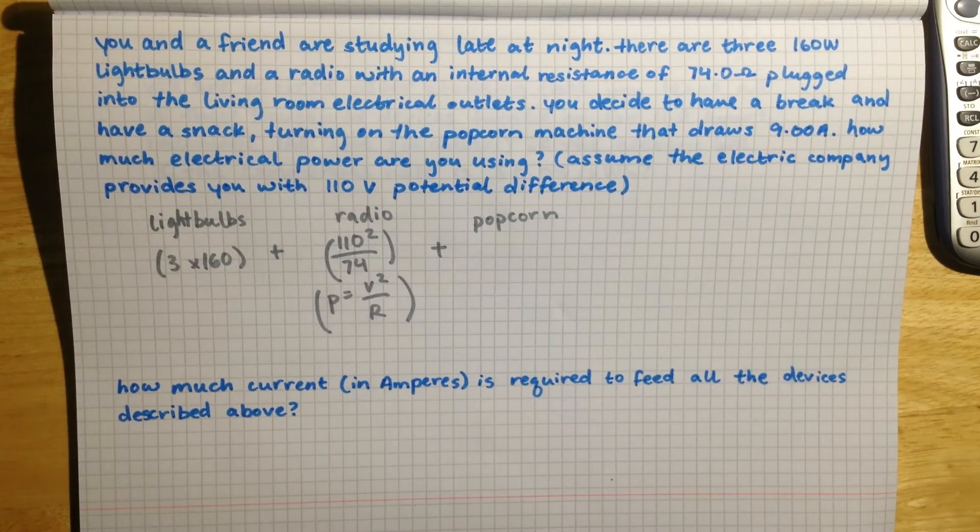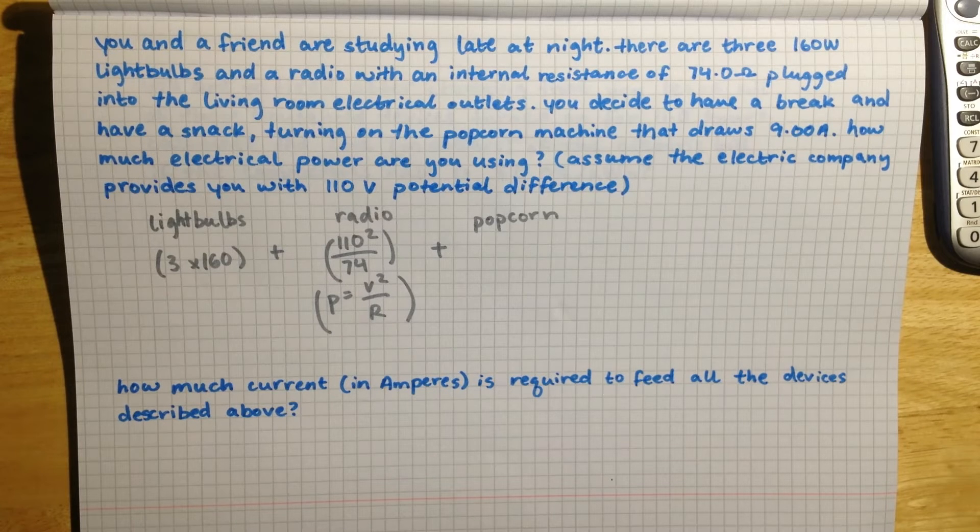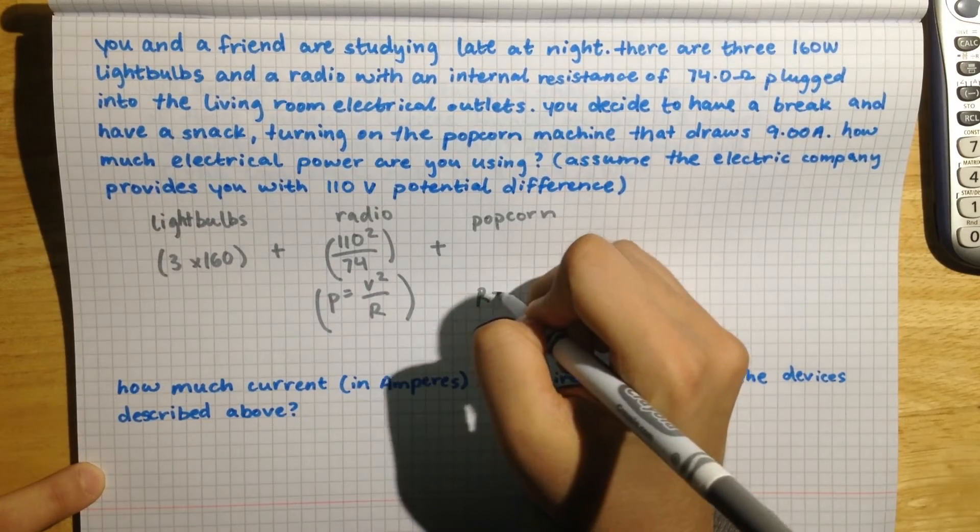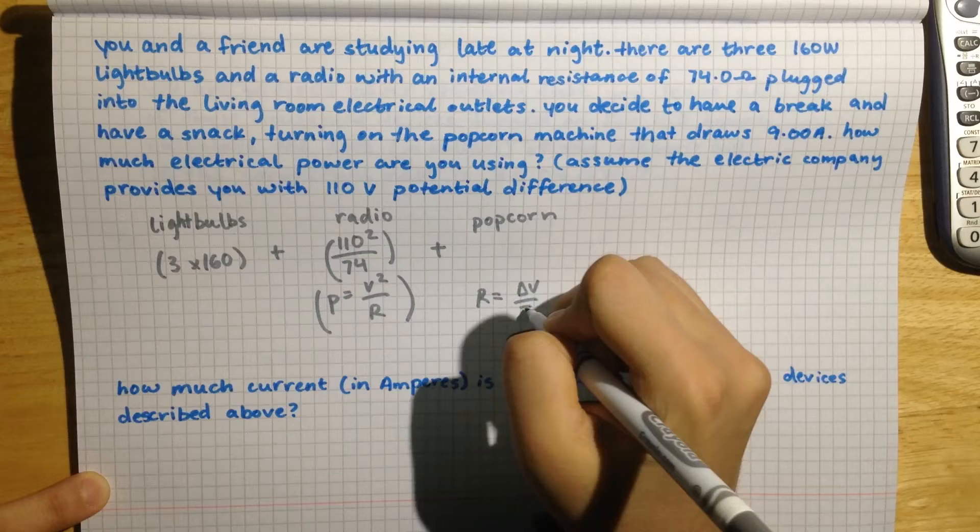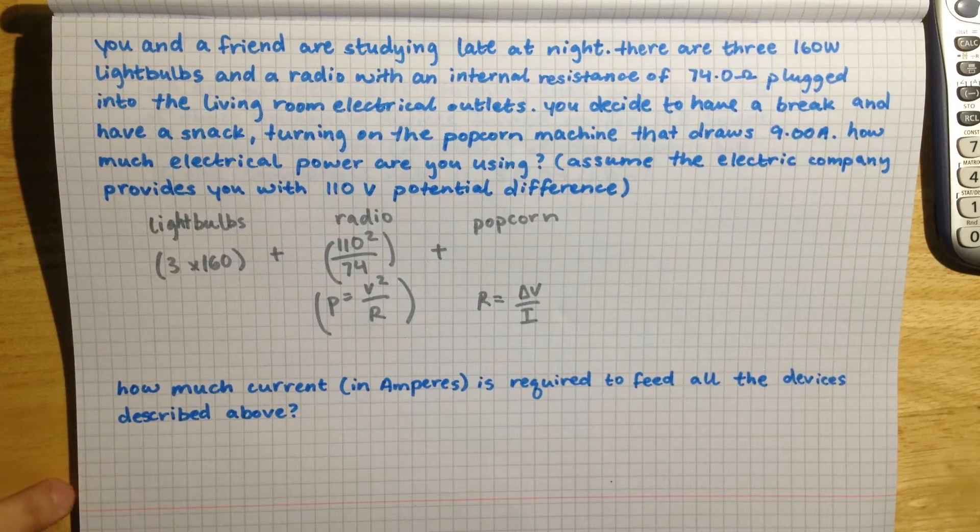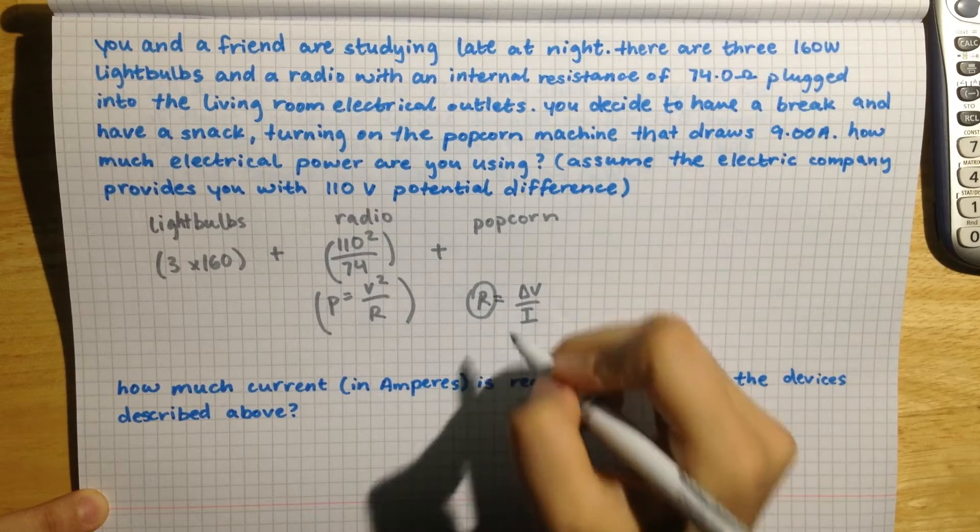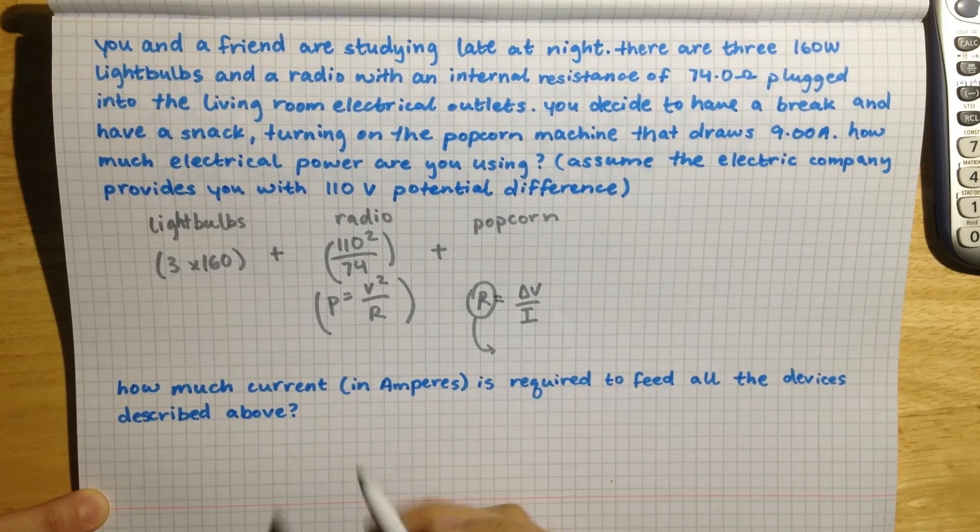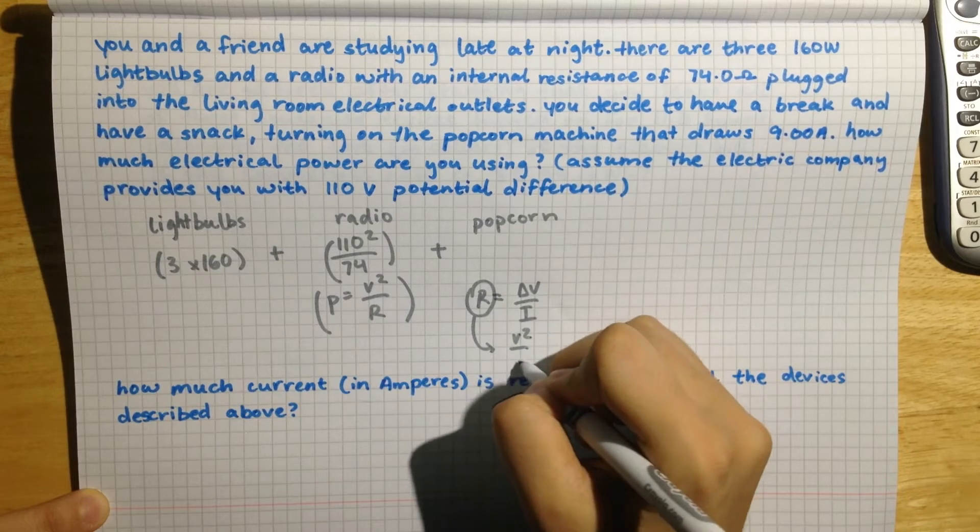And then we are going to add that to the popcorn machine. And for the popcorn machine it's a little bit of a longer calculation, but it's simple enough. We are going to use the fact that resistance is equal to delta V over I, which I stands for current, and then that resistance that we calculate is in the denominator of this equation right here, P equals V squared over R.